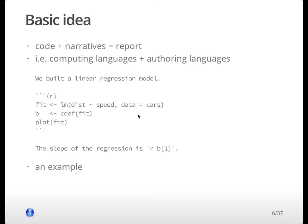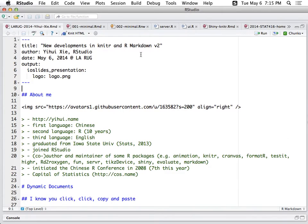You write some R code in this inline expression, and when you compile this document, the code will be executed and the results will be in the output. Everything is dynamic — you don't hard-code anything. Now imagine your boss says, 'Can you remove the intercept from the linear model?' You just change the formula to dist ~ speed minus one, which means removing the intercept. You update that formula, compile the document again, and the slope will be automatically updated. This is an example of a dynamic document.